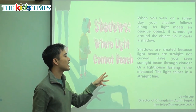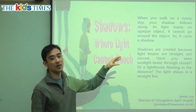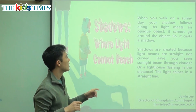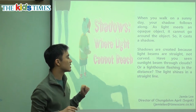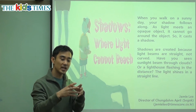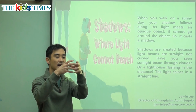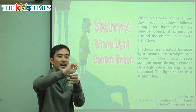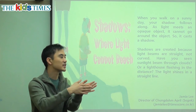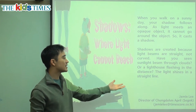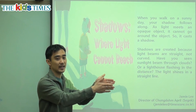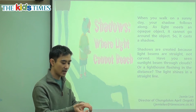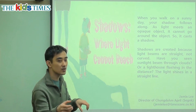Have you seen sunlight beam through the clouds? Did you see the light coming from the clouds — was it curved or was it straight? Or a lighthouse flashing in the distance — a tall tower near the ocean with a light that helps sailors. When you see that light, is it straight or curved? The light shines in a straight line. Think of a flashlight when you go camping — you click it on and the light goes straight. It does not curve.